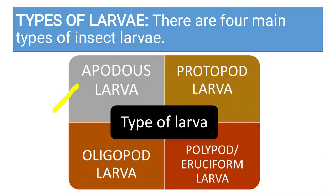There are four types: apodus larva, protopod larva, oligopod larva, and polypod or eruciform larva.